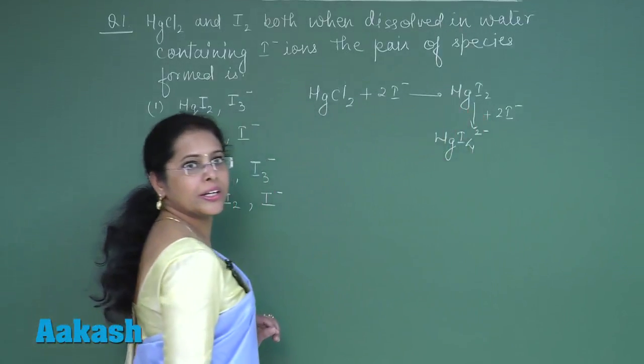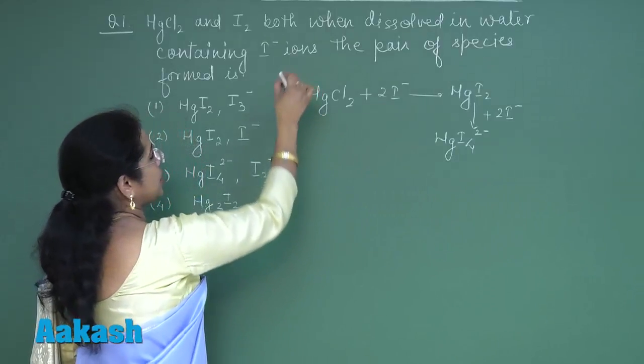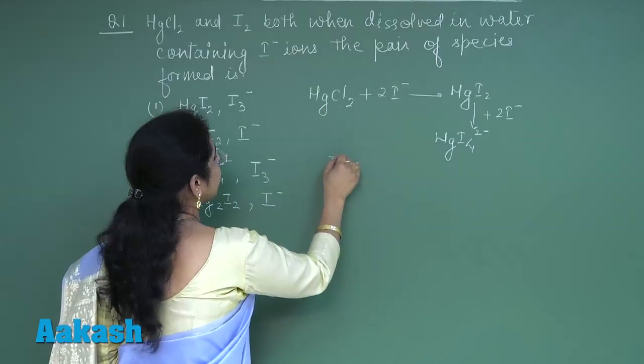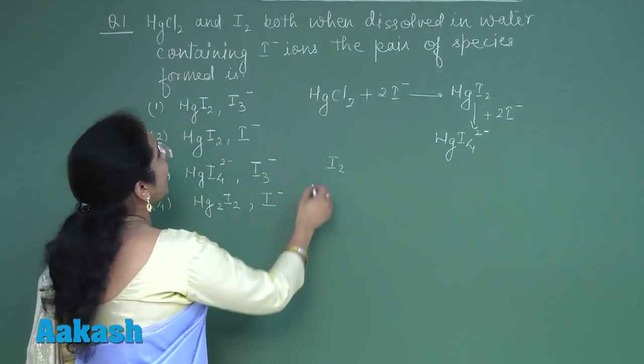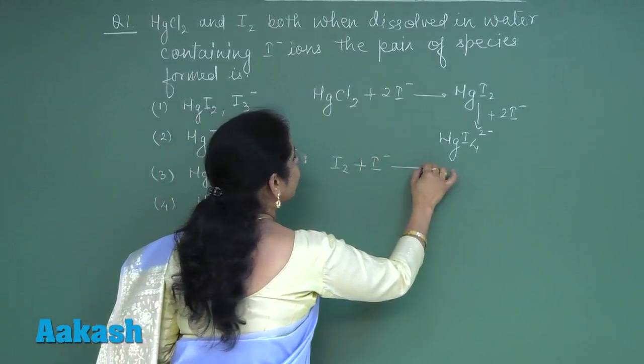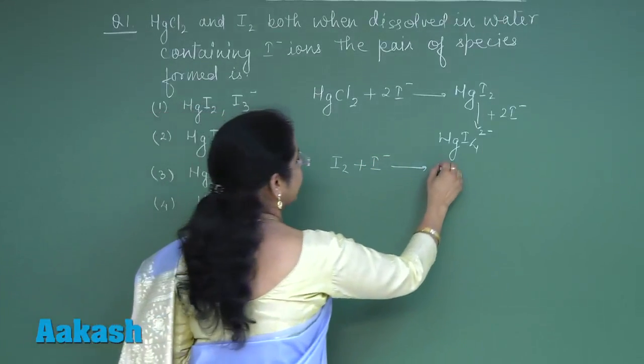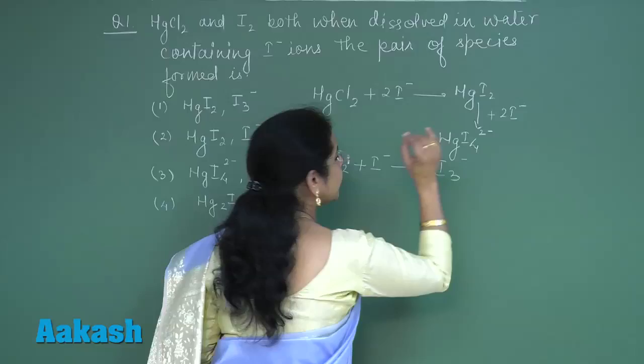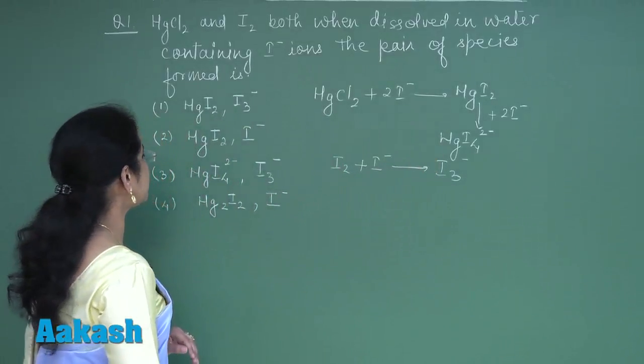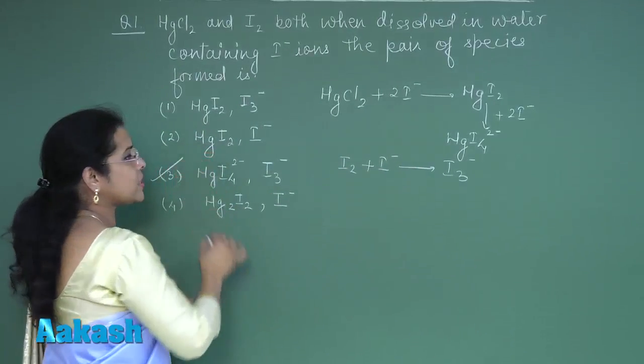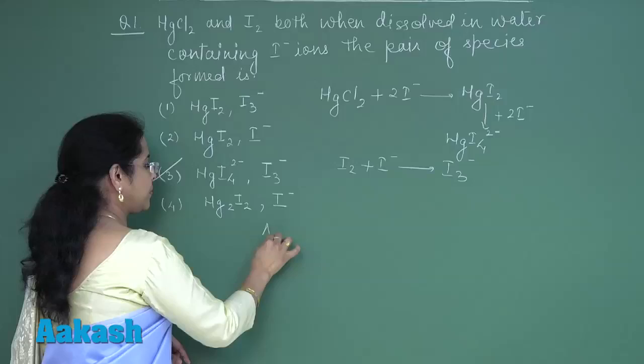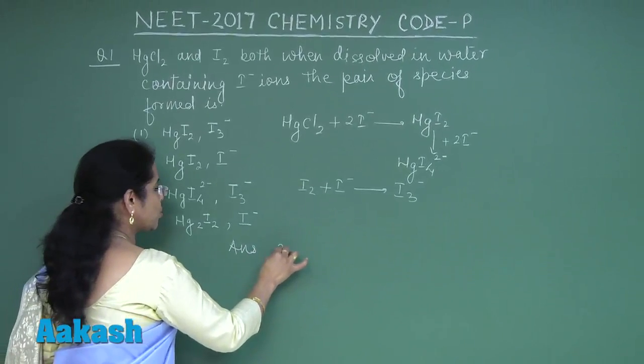In this question, the mixture is also containing iodine. This iodine will react with iodide ion forming a polyhalide ion I3- negative ion. So in this question, option 3 is the correct option. So answer of this question should be option 3.